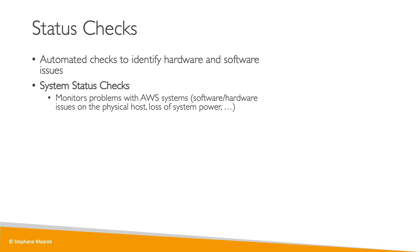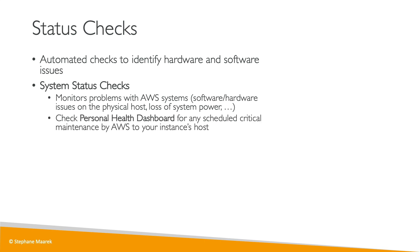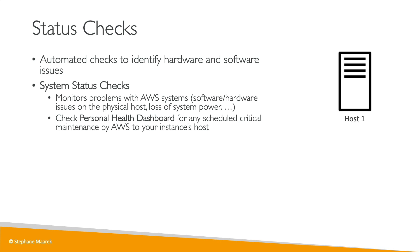For example, if your host has a loss of system power and so on. To have an overview of these issues, a place to look at is the Personal Health Dashboard, and this will give you information around any scheduled critical maintenance by AWS that will affect your EC2 instance host. Therefore you need to act on it — a way to do so is to stop and start your instance.